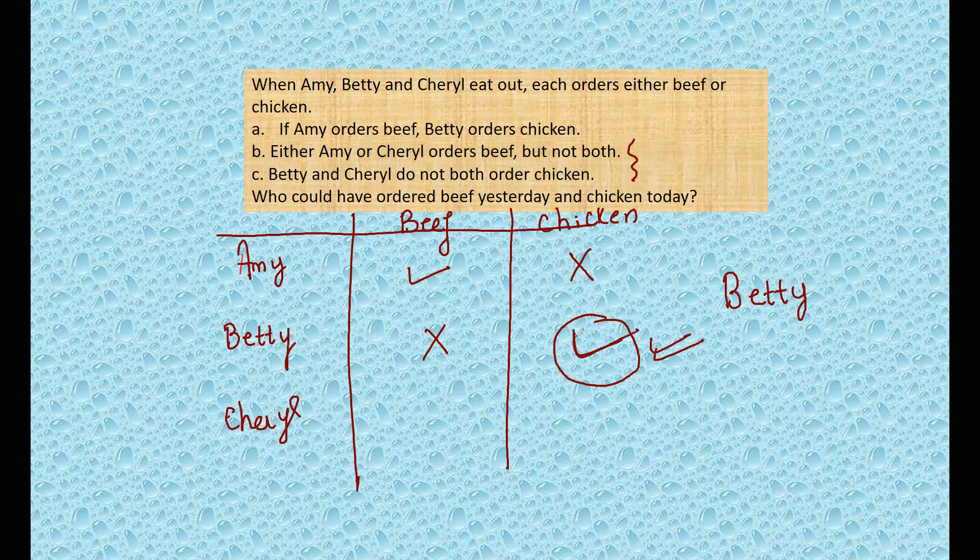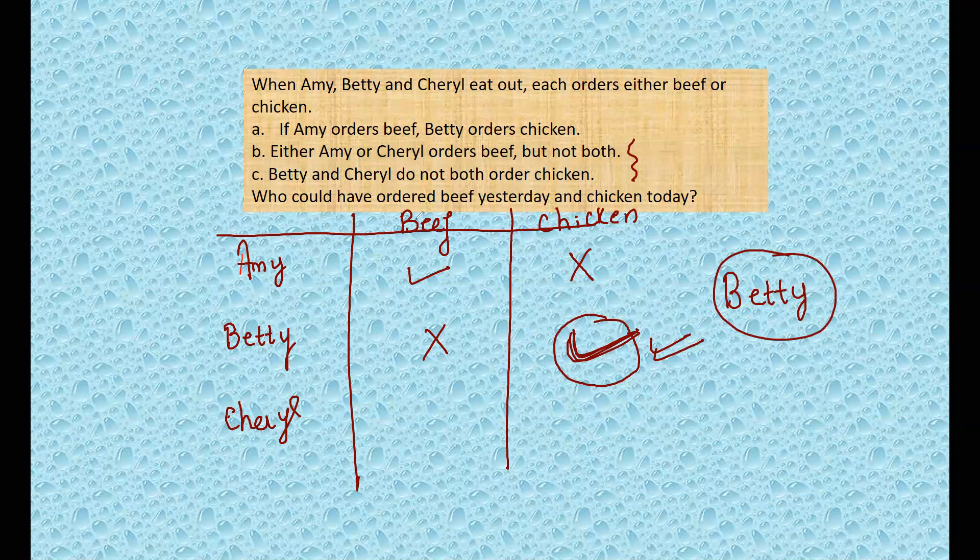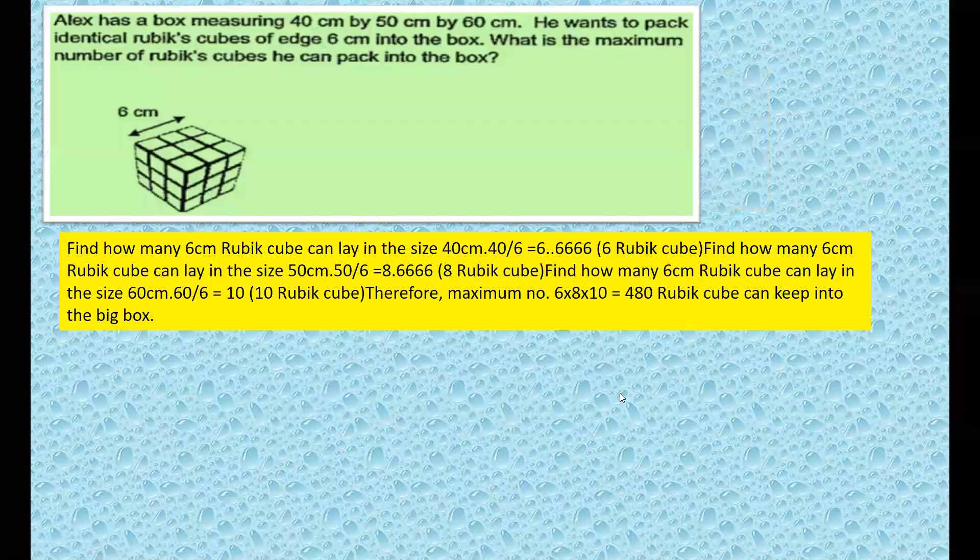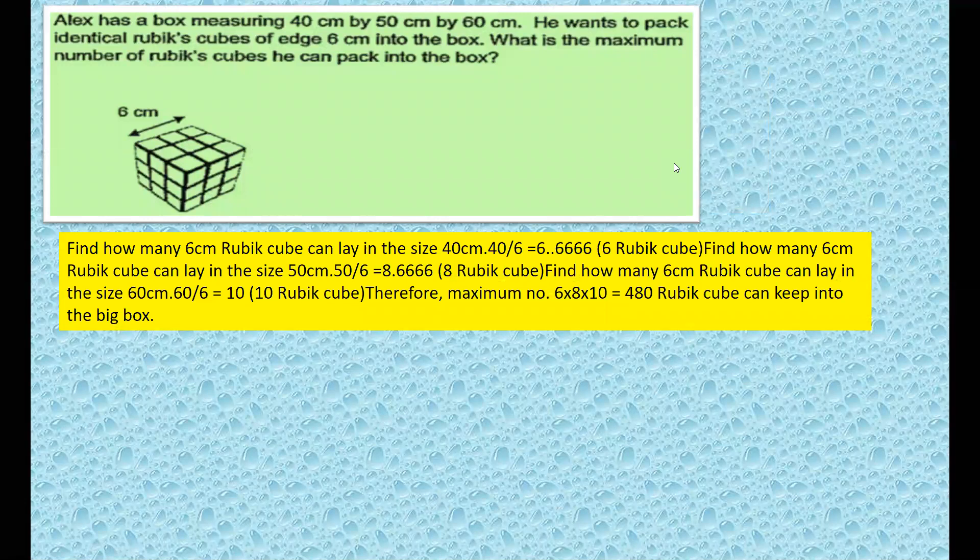So who could have ordered beef yesterday? You can definitely say that Betty has ordered chicken today because this is our plus mark we have right here. So definitely Betty would have ordered chicken today and Amy must have ordered beef yesterday because it will set with other conclusions. This is just a simple question of visualization, not very real mathematics.